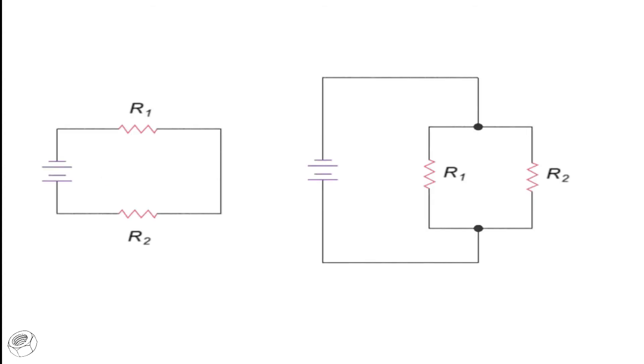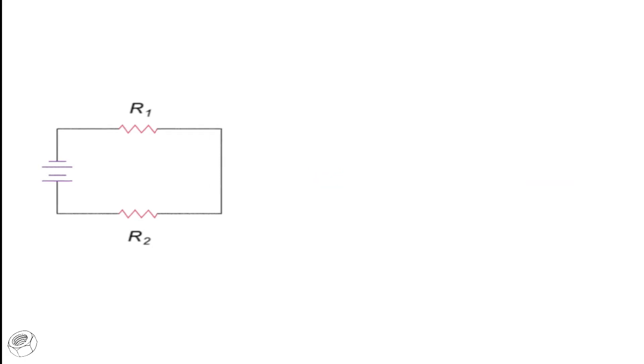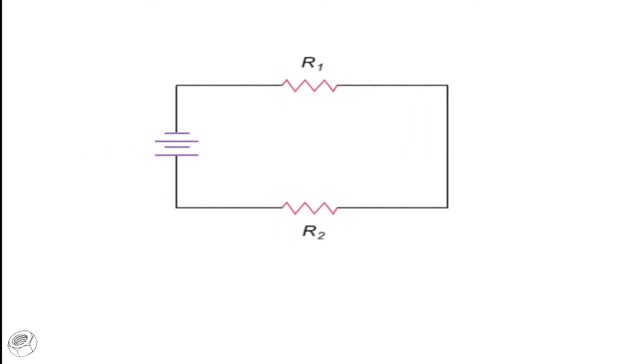Total resistance in series and parallel circuits can be determined using basic equations. The total resistance of load resistors R1, R2, and R3, shown here in series, can be determined by simply adding their ohms values together.